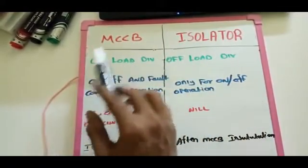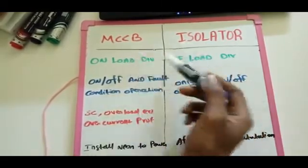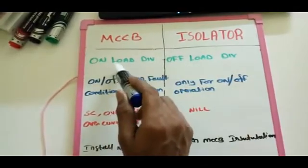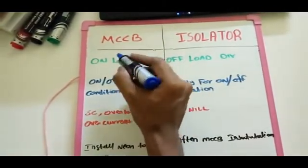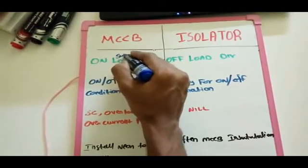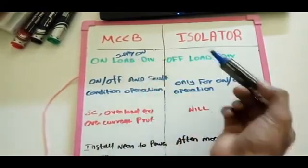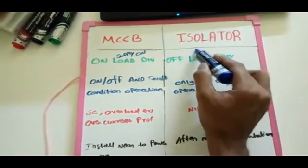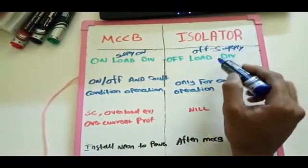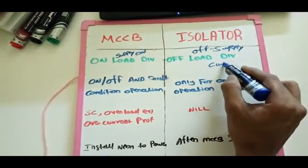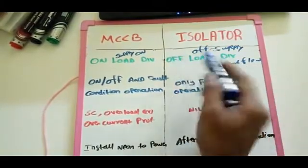The MCCB operates as an on-load device and the Isolator acts as an off-load device. The MCCB trips the circuit while the load is connected — providing overload and overcurrent protection — automatically operating to disconnect the circuit. The Isolator is used to switch off the circuit for maintenance and repair purposes, isolating the healthy main circuit to perform any maintenance or fault clearance services.